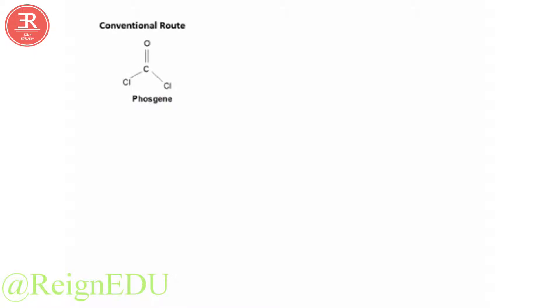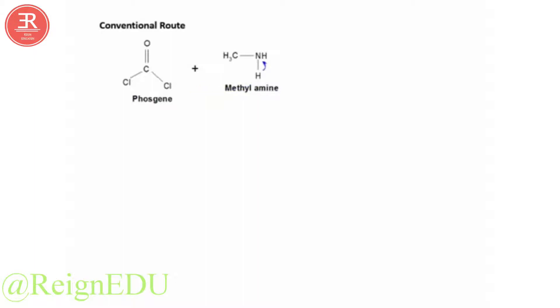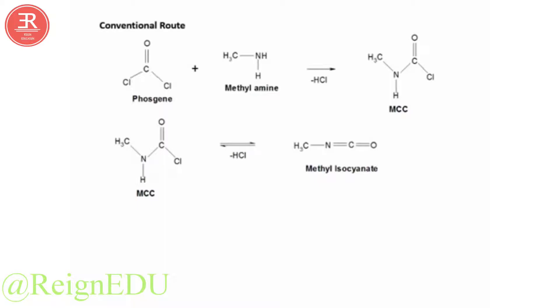In the conventional route, phosgene is used as a starting material. It is treated with methylamine. The lone pair on the nitrogen attacks the carbon of the carbonyl group. Chlorine, being a weak ligand, is released. The negatively charged chlorine atom attacks the hydrogen and the lone pair of electrons are retained on the nitrogen atom. This is how HCl is eliminated and we get MCC, also known as methyl carbonyl chloride. MCC undergoes rearrangement — the lone pair on the nitrogen attacks the carbon, Cl⁻ is eliminated, and HCl is eliminated to give methyl isocyanate.